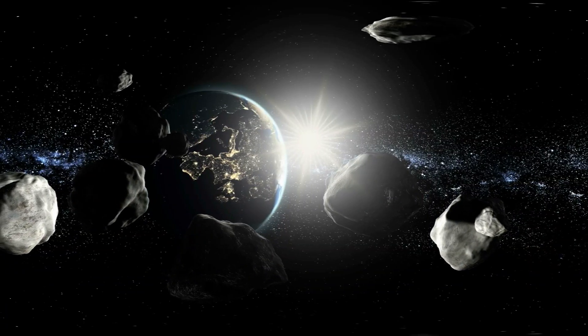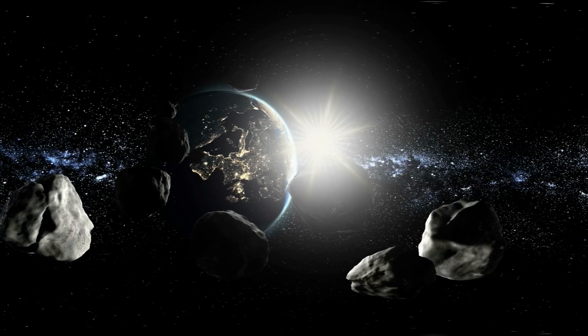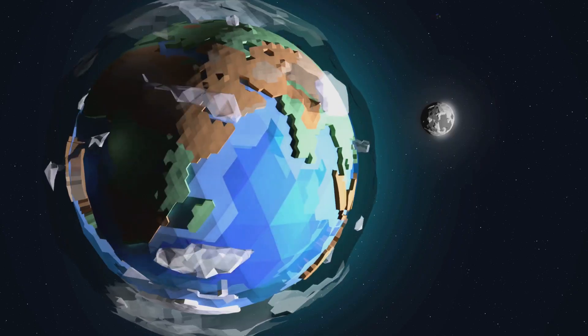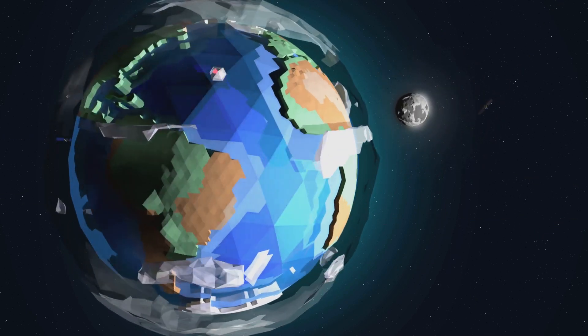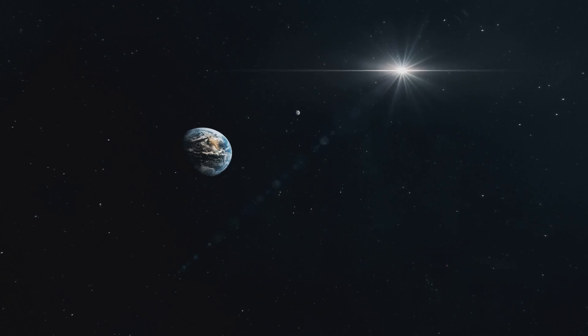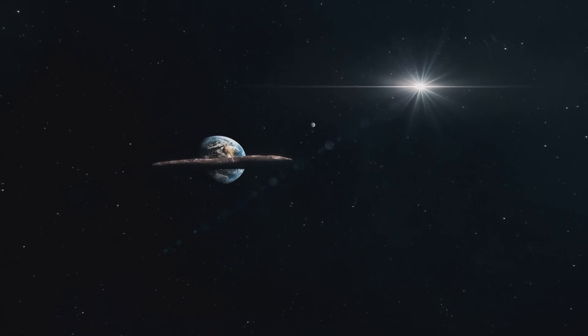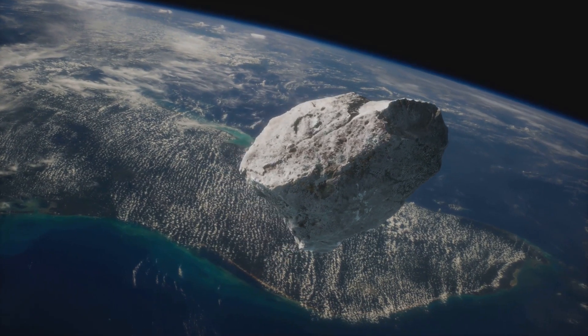During its brief stay, 2024 PT5 will loop around our planet in a complex dance. This looping motion is a result of intricate gravitational interactions. The mini-moon's orbit is not a perfect circle. Instead, it follows a path that is influenced by multiple gravitational forces. It is elongated and irregular, making the asteroid's path unpredictable and fascinating to observe. This is due to the combined gravitational forces of the Earth, Sun, and Moon, constantly altering the asteroid's trajectory.